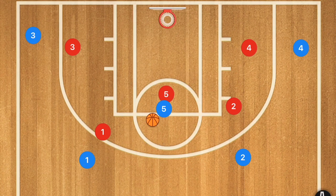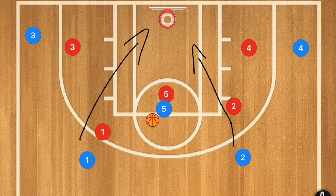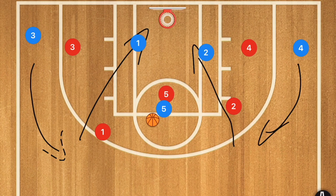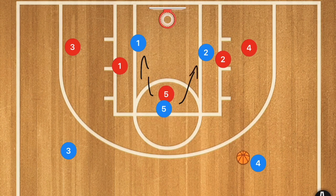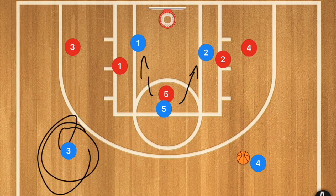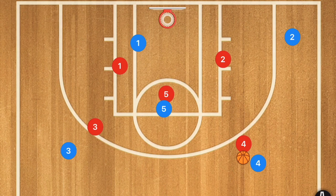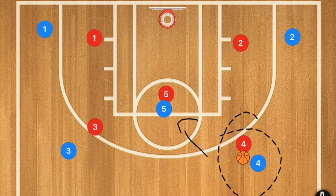After player one passes to player five, player one cuts to the rim, and player two also cuts to the rim. Players three and four fill the free-throw-line extended wings. If player five has a pass down to players one or two, he should take it for easy layups. He can also kick it out to player four or player three. If those cutting players were not open, player four can then pass to player five.